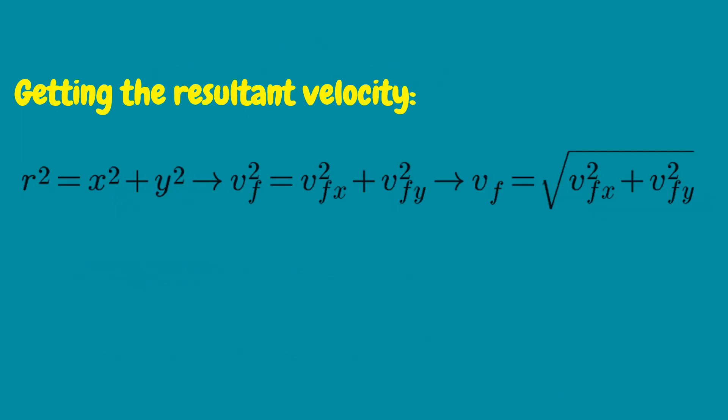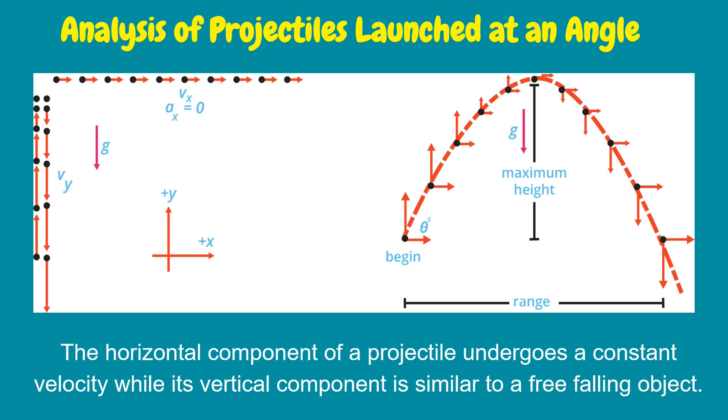In getting the resultant velocity using the Pythagorean theorem, resultant velocity equals square root of final velocity squared along the x component plus final velocity squared along the y component. The horizontal component of a projectile undergoes constant velocity while its vertical component is similar to a free falling object.